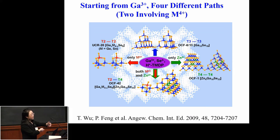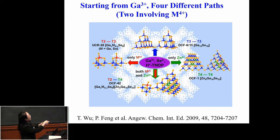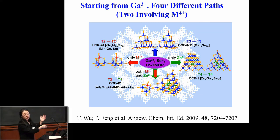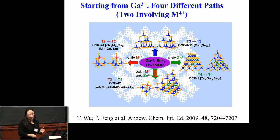You can tune the size of the super-tetrahedral cluster by controlling the metal charge. For T2, you use +4 metal; for T3, introduce +3; for T4, use a lower-charged cation; for T5, combine +4 and +2. The reason is that sulfur has different coordination environments on the cluster: two-coordinated on edges and corners, three-coordinated on faces, and four-coordinated in the interior. You need different metals with different charges to satisfy the local charge environment.